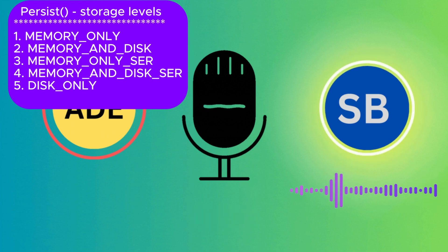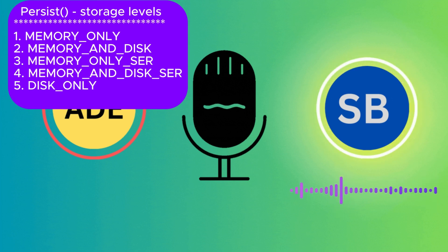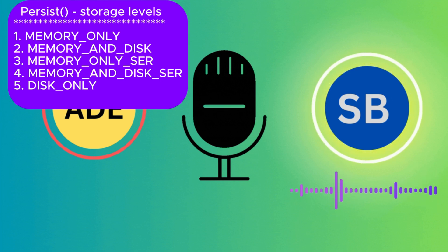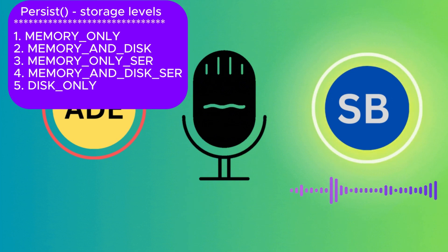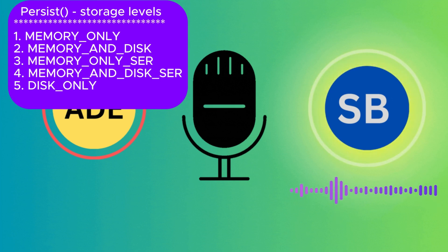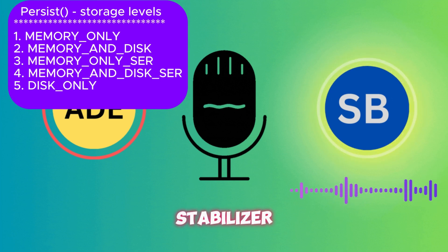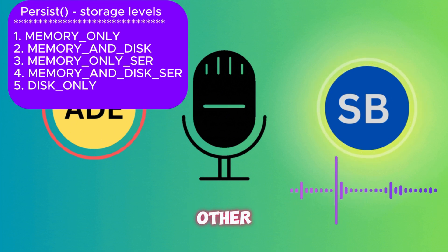MEMORY_AND_DISK stores the RDD partitions in memory, and if any partitions do not fit into memory, it spills them to disk. There is also MEMORY_AND_DISK_SER, which stores data in serialized format in both memory and disk.